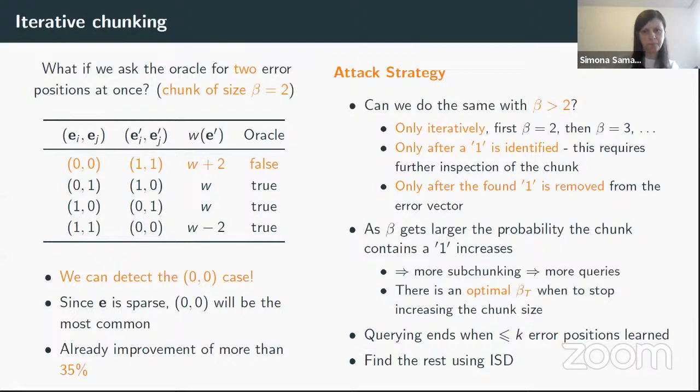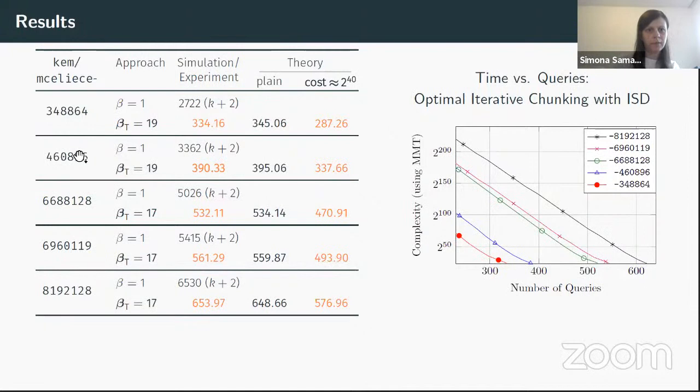So, my final slide shows the results. And for the McEliece parameters here, we see that compared to not using the iterative chunking, there is a huge improvement. And here I have a graph showing the trade-off between the two, number of queries to complexity. So, if an attacker has more computational power, then he can reduce the number of queries and vice versa. Thanks. And if you have any questions, please.